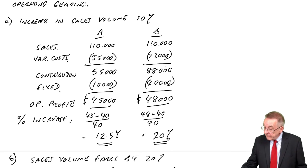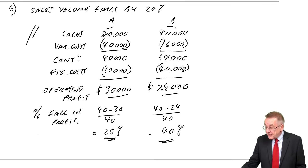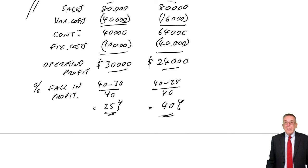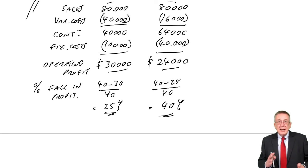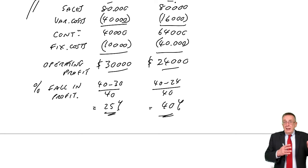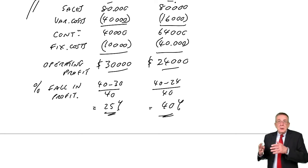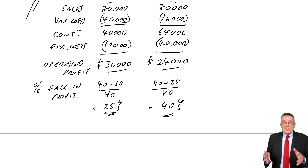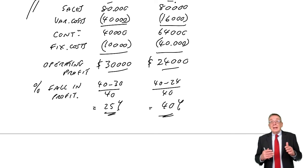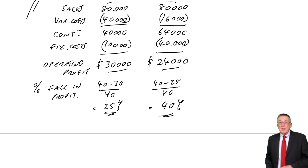So that was an extreme example, but I hope it made the point: fixed costs of any nature make things more risky, and there are two different reasons. One is the way you structure your running costs — your operating costs. Do you pay fixed salaries or pay people by the day? Variable or fixed. The other reason for having fixed costs is the way you raise your finance — the more you raise from debt borrowing, the more fixed interest, and the more risk to the shareholders.